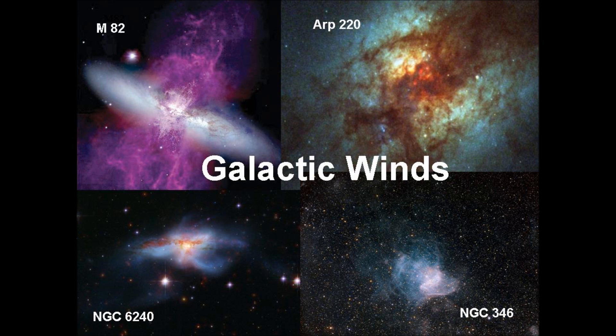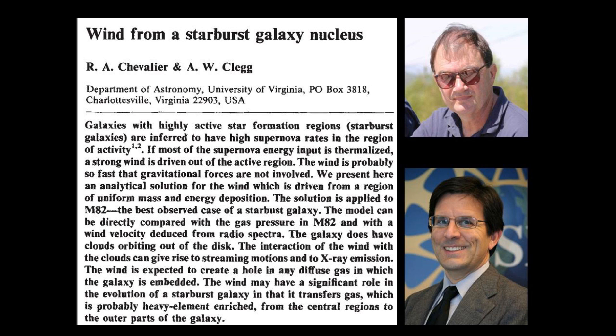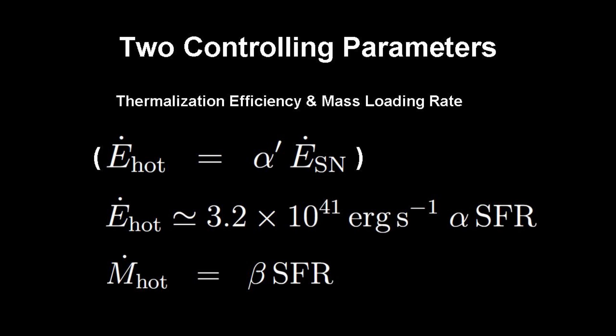Galactic winds are universal and important in rapidly star-forming galaxies. In 1985, Chevalier and Clark developed a one-dimensional model for a very hot wind created by supernovae energy injection. Numerical simulations have shown that this analytical model provides a good description of the hot wind fluid.